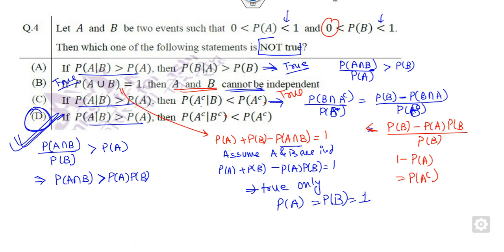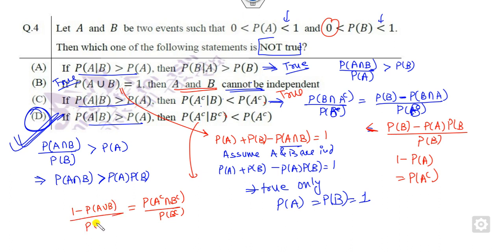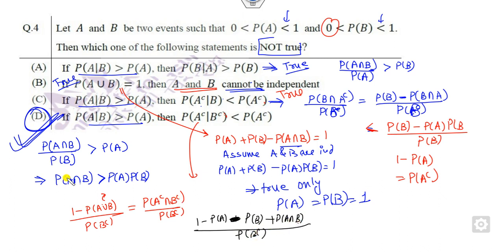To verify option D: write P(A^c|B^c) = P(A^c∩B^c)/P(B^c) = [1 - P(A∪B)] / P(B^c). Expanding P(A∪B) = P(A) + P(B) - P(A∩B), and since P(A∩B) > P(A)·P(B), the inequality gives a less-than sign — contradicting what option D claims. So the right answer is D.